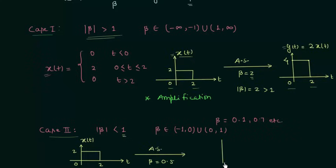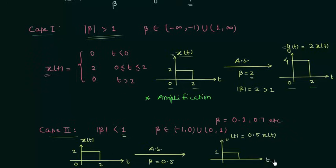The original signal will now change to a signal where the amplitude is equal to 1. The time will remain the same, but the amplitude decreases to 1, because multiplying 2 by 0.5 gives 1. The changed signal is y(t) = 0.5·x(t), with the time axis spanning 0 to 2. Comparing the two signals, there is a reduction in amplitude. So case number 2 is the case of reduction.